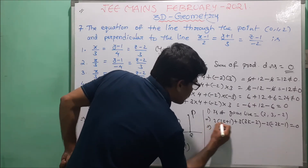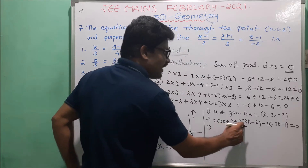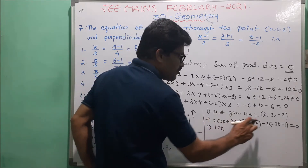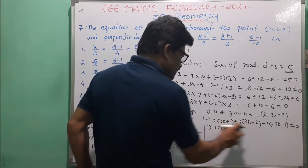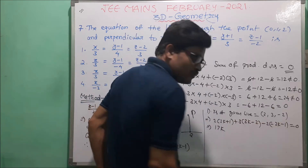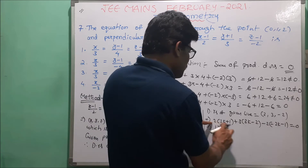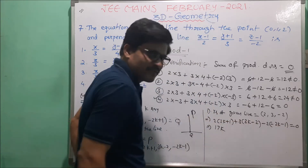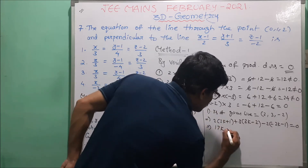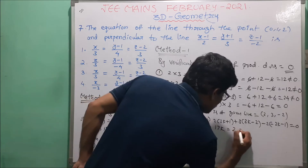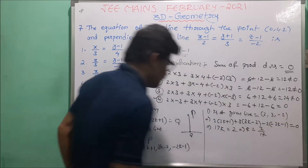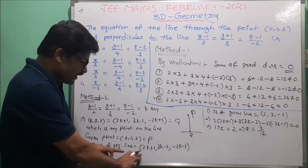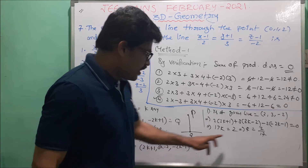Simplifying: 4k plus 9k plus 4k = 17k. Constants: 2 into 1 is 2, plus 3 into minus 2 is minus 6, plus minus 2 into minus 1 is plus 2. So 2 minus 6 plus 2 equals minus 2. Therefore 17k equals 2, so k equals 2 by 17.